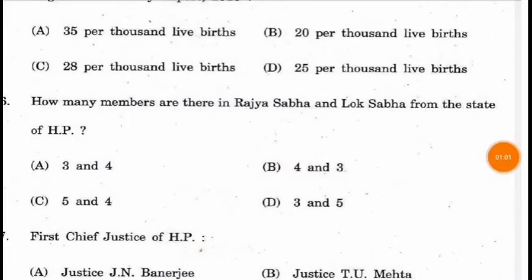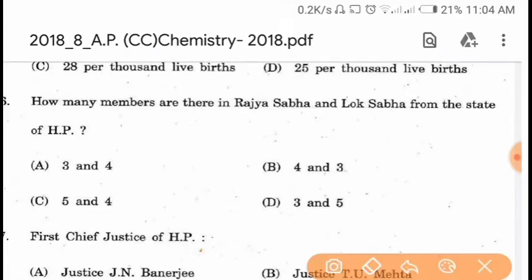Question 86. How many members are there in Rajya Sabha and Lok Sabha from the state of Himachal Pradesh? In Rajya Sabha there are 3 members and in Lok Sabha there are 4 members. The correct answer is option A.